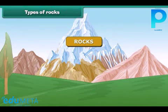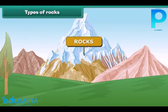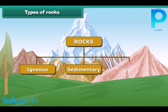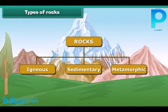Dear friends, there are three main types of rocks depending on how they are formed. These are igneous rocks, sedimentary rocks, and metamorphic rocks. Let's discuss about them in detail.